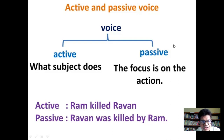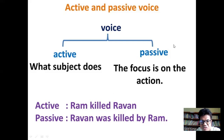An active sentence is where what the subject does is represented directly — that is called an active sentence. In passive, the focus is on the action; the action is the main purpose. The subject won't be the main element — only the action, meaning the verb, will act directly. That is what a passive sentence is.